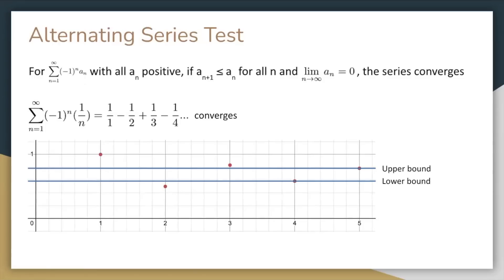The alternating series test. Consider the series 1 minus one-half plus one-third minus one-fourth and so on. The magnitude of each term is less than or equal to the magnitude of the previous term, and the limit as n approaches infinity of a_n equals zero. Therefore, this series converges. The intuition behind this is that partial sums that end with the positive term provide an upper bound for the value of the infinite series, and partial sums that end with the negative term provide a lower bound. In this graph of partial sums, you can see that s4 and s5 provide an upper and lower bound. And if the nth term converges to zero, then the upper and lower bound converge to the same value, the value of the infinite series.